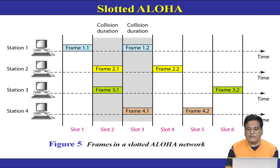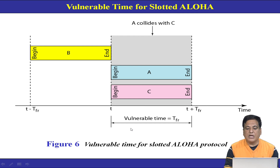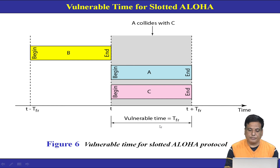The maximum efficiency achieved in Slotted ALOHA is approximately 37%. The vulnerable time in Slotted ALOHA is TFR, the average frame transmission time. In Slotted ALOHA we reduce the vulnerable time — the time during which a collision is probable when more than one station sends frames. The vulnerable time in Slotted ALOHA is TFR, which is half of that of Pure ALOHA.